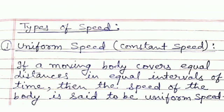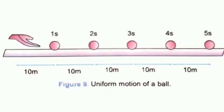The first type is uniform speed or constant speed. If a moving body covers equal distances in equal intervals of time, then the speed of the body is said to be uniform. In this figure, the distance covered by the ball in the first second, second second, and third second is the same — that is 10 meters. So the ball covers 10 meters in each second along a straight line, giving it uniform speed.